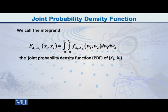That is the joint PDF, the joint probability density function of the ordered pair X1 and X2. Again, small f of X1 and X2 at the point w1, w2 — again, that is a dummy variable. If we are writing inside the integral, then we will write w1, w2.